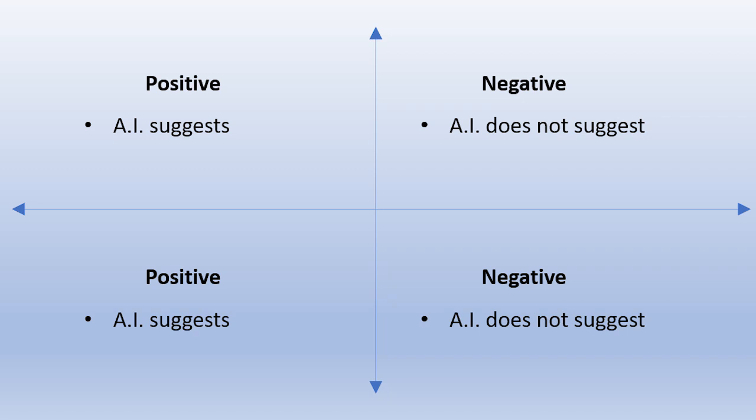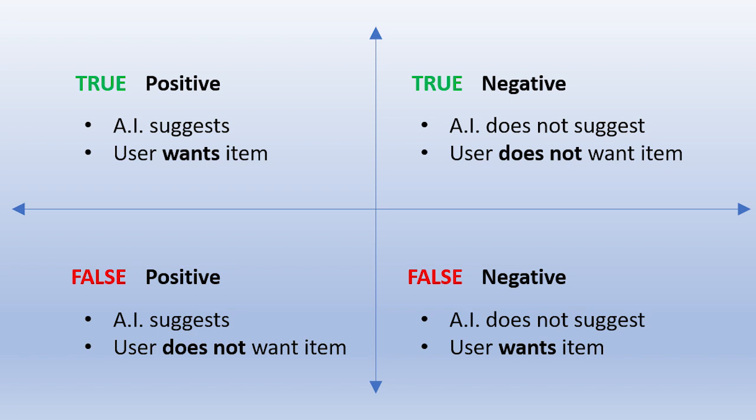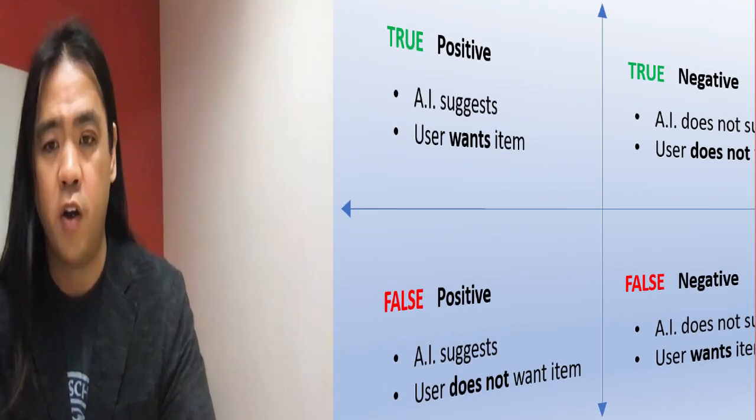At a basic level, designers need to understand that machine learning iterates through a training matrix. On one axis you have positive or negative — in the example of a retail website, positive or negative would be whether or not the system decides to show an upsell to the user. On the other axis you have true or false — whether or not the user actually wanted the item. As designers, we need to be very deliberate about where those feedback points are for true negative, true positive, false negative, and false positive, and where they need to be measured in the experience.